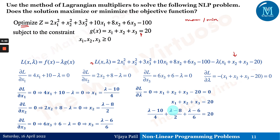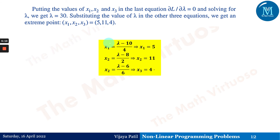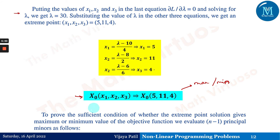Now x1, x2, and x3 are all expressed in terms of lambda. Substituting these values into the constraint equation x1 + x2 + x3 = 20, we get lambda = 30. Putting lambda = 30 back into each expression gives x1 = 5, x2 = 11, and x3 = 4. So the stationary point is x0 = (5, 11, 4), at which maxima or minima might exist.